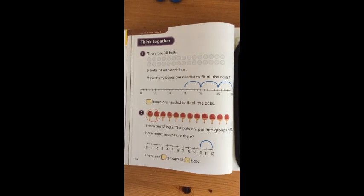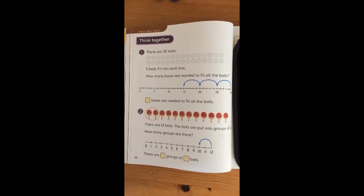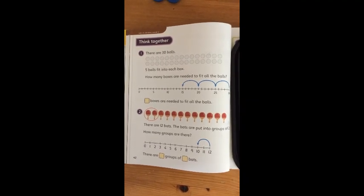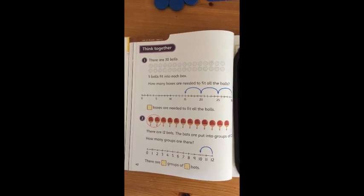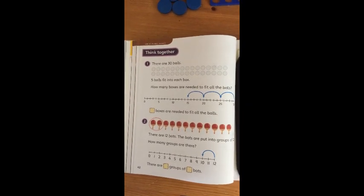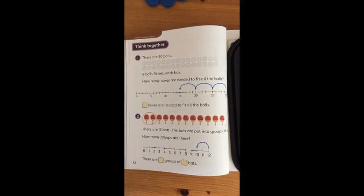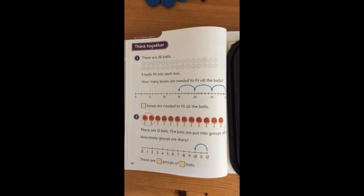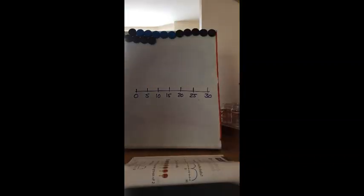Let's think together. Question one: there are 30 balls. Now because we're getting into bigger numbers, it might be time to use our number line. Five balls fit into each box. If you know your five times table you can count in fives until you get to 30, but we should double-check on our number line just to make sure. Luckily the number line is already drawn out for us.